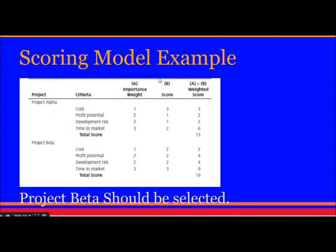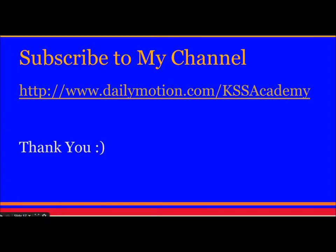This is an example of a scoring model. The scoring model has certain criteria to which we assign scores and weights, then calculate the weighted score and total. Whichever project gets the highest total score is selected. In this example, Project Beta scored 19 while Project Alpha scored 13, so Project Beta is the better and selected project.